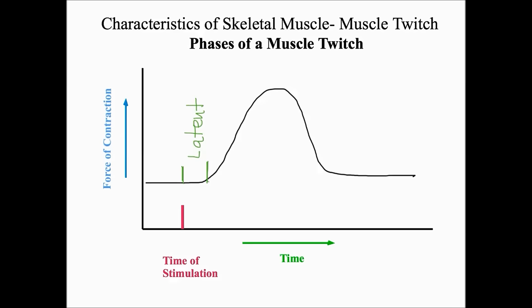The second phase of a muscle twitch is where the muscle shortens in length — this is called the contraction phase. The last phase of a muscle twitch is where the muscle is no longer contracting, which we call the relaxation phase.